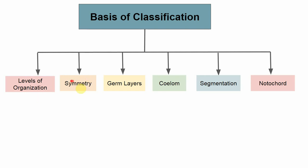The next basis is symmetry — essentially the body proportion. Some animals do not show any symmetry and are called asymmetric. Some organisms show bilateral symmetry, where the body can be divided into two equal halves — the left and right halves are identical. The next is radial symmetry, observed in Coelenterata, Ctenophora, and even Echinodermata, where the axis cuts through the central axis of the body.